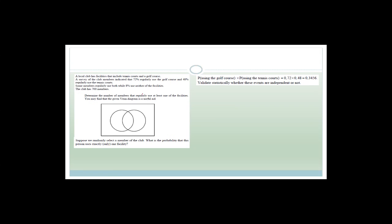Now a Venn diagram question with probability. A local club has tennis courts and a golf course. A survey shows 72 percent regularly use the golf course and 48 percent regularly use the tennis court. Eight percent use neither the tennis nor the golf. The club has 700 members total.